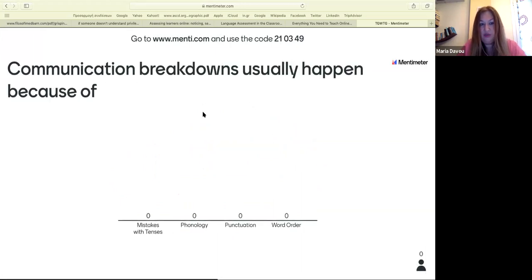Let's move to the next question now. Communication breakdowns usually happen because of mistakes with tenses, phonology, punctuation, or word order. We've got lots of people going for word order. Nobody goes for punctuation. Mistakes with tenses and phonology are almost the same. It seems that word order is the big thing here. Your second most popular answer is mistakes with tenses, phonology, and just one or two people voted for punctuation.